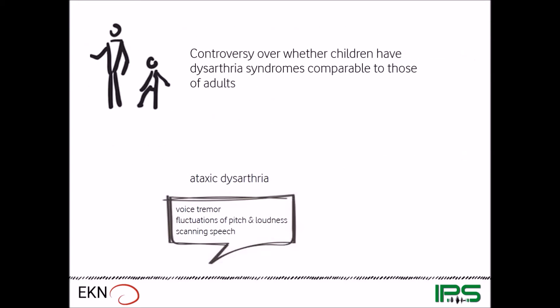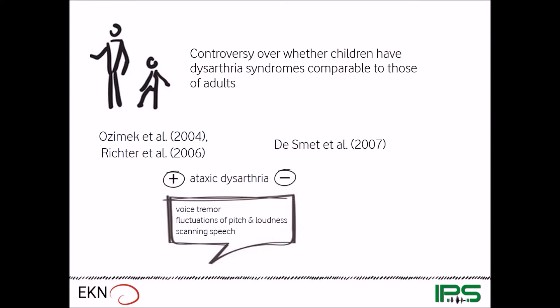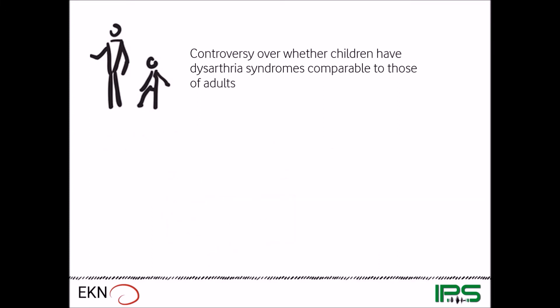When it comes to children there is an ongoing controversy over whether they have dysarthria syndromes that are comparable to those of adults. Some authors did report symptoms that were specific, for instance, for ataxic dysarthria in children, but other authors failed to find these specific symptoms. So if there should be differences between children and adults regarding the occurrence of dysarthria syndromes, there are at least two different explanations.